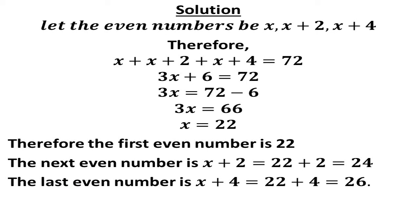So if you solve the left hand side, you'll be having 3x plus 6 is equal to 72. Now if you collect like terms, take the 6 to the right hand side, you'll be having 3x is equal to 72 minus 6.